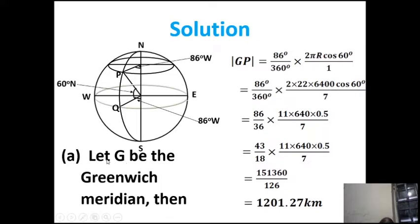From the diagram, P is at 86° West and 60° North. For the first question, let G be the Greenwich Meridian. The distance GP is the longitude difference: (86° − 0°) / 360° × 2πr × cos(latitude). Upon substitution of values, the answer is 1,201.27 kilometers, given to two decimal places.